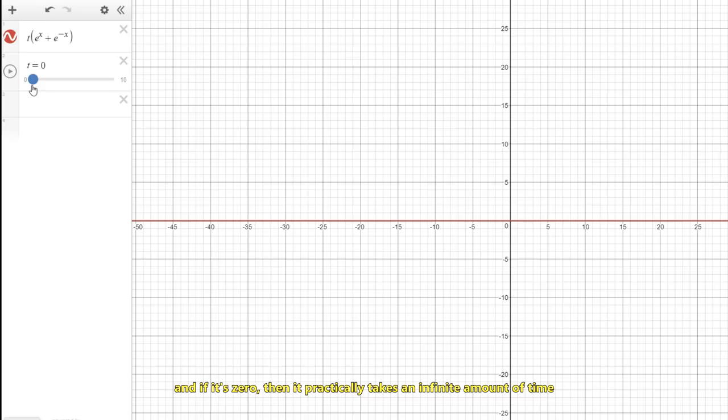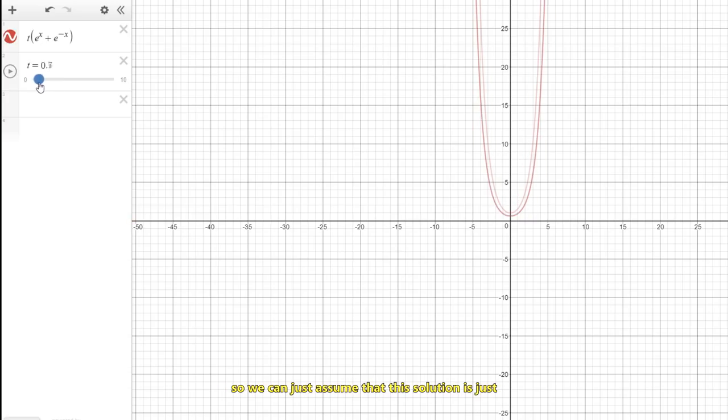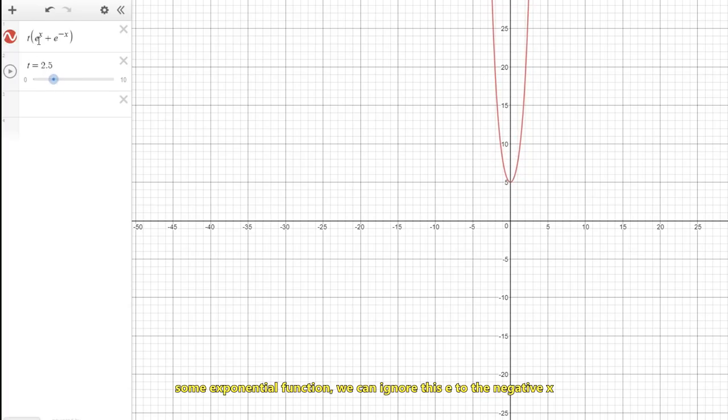And if it's zero, then it practically takes an infinite amount of time for the rope to fall off the table. Meaning, the rope is never going to accelerate off the table. So we can just assume that this solution is just some exponential function. We can ignore this e to the negative x. That's what I was trying to say, and I realized it wasn't that obvious. Shame on me.